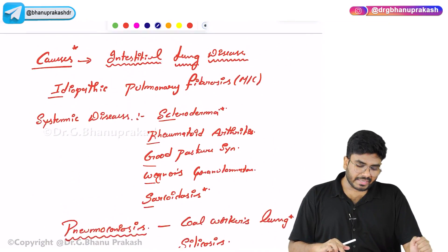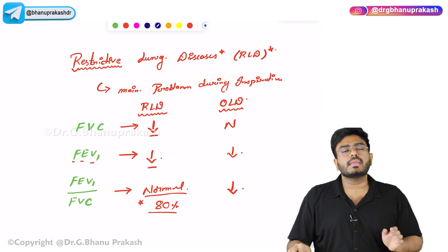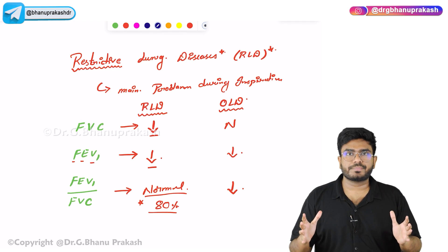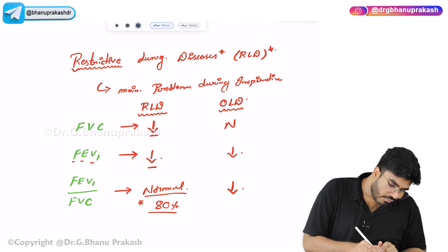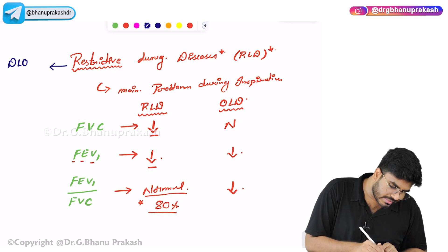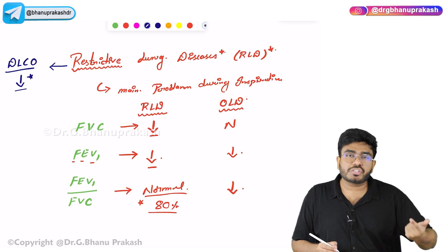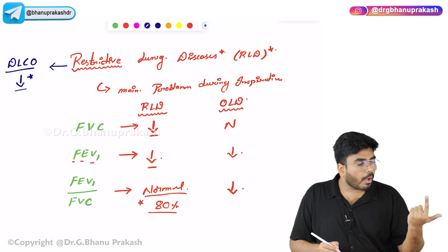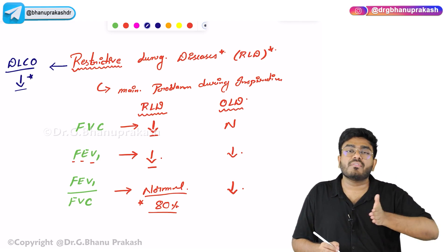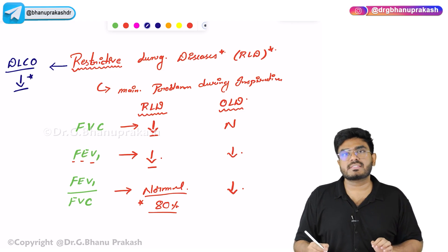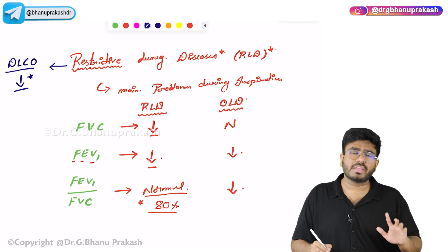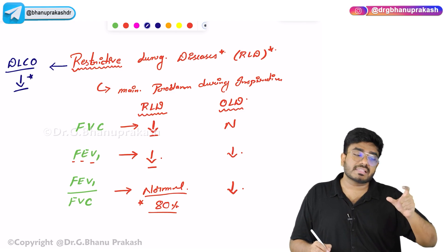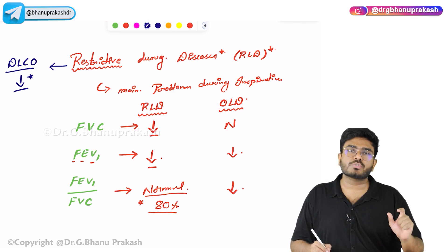In restrictive lung diseases, the main problem is with inspiration — lungs are not expanding properly. There is pulmonary fibrosis, and as a result the diffusion of gases is affected. The DLCO study is going to be decreased in restrictive lung diseases because proper gas exchange does not occur. FVC and FEV1 are both reduced; since they reduce in the same proportion, the FEV1/FVC ratio is going to be normal.